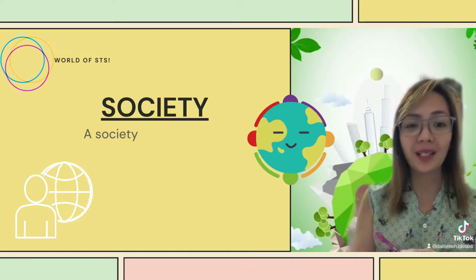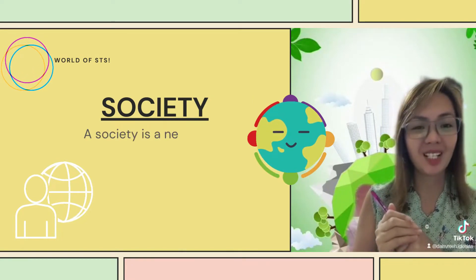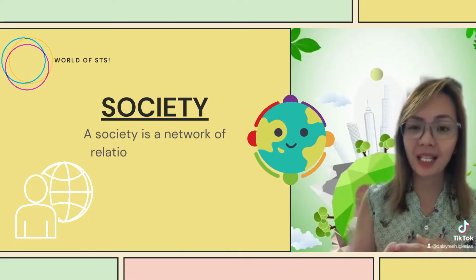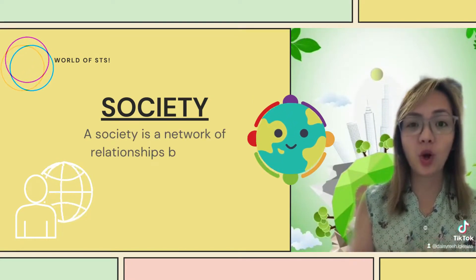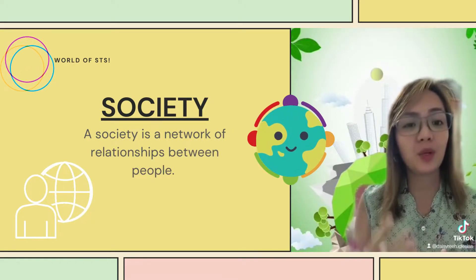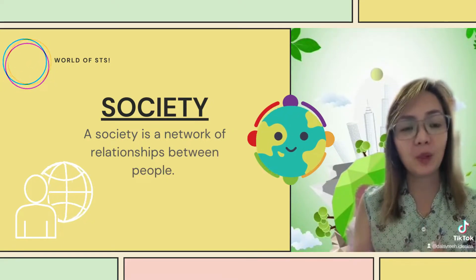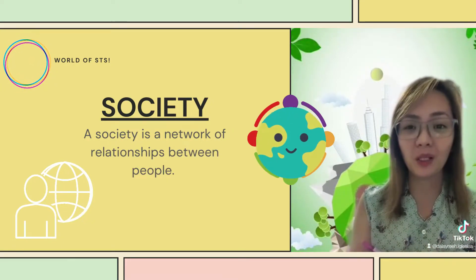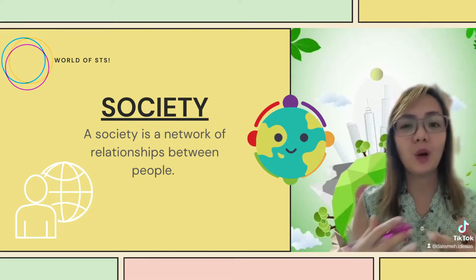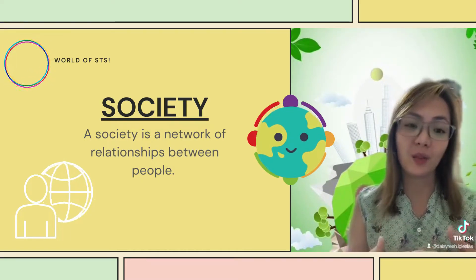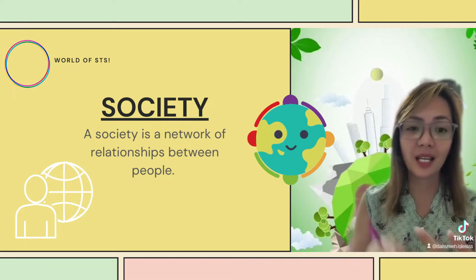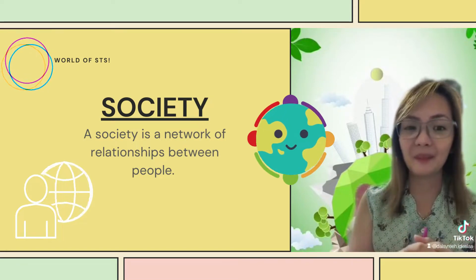Lastly, what is Society? A society is a network of relationships between people. It is a community of people with a common goal. So now, when we put all these together, we get STS or Science, Technology, and Society.